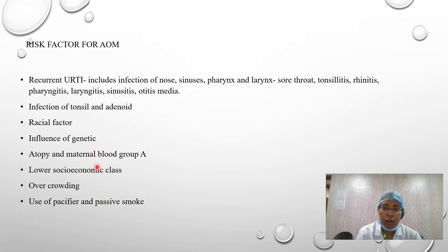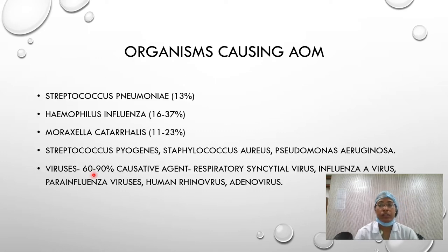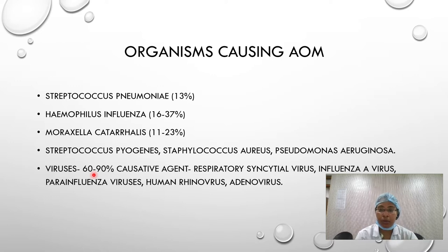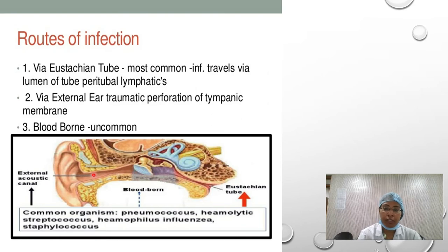Regarding organisms causing acute otitis media: viral infections are more common than bacterial infections. The most common viral cause is respiratory syncytial virus; others include human rhinovirus and adenovirus. Among bacterial causes, Haemophilus influenzae is the most common. In pre-PG exams, if both viral and bacterial options are given, choose the viral cause, as 60–90% of causative agents are viral. If only bacterial causes are listed, choose Haemophilus influenzae.